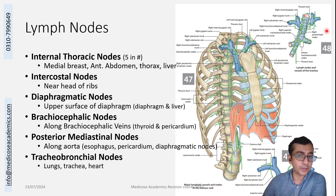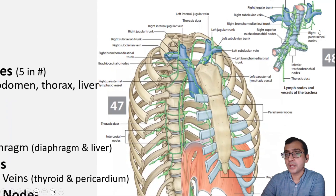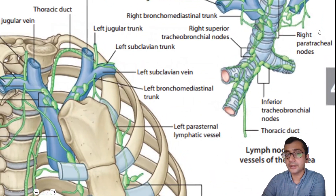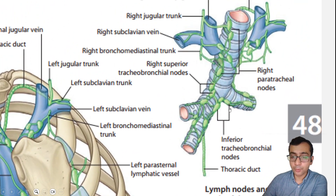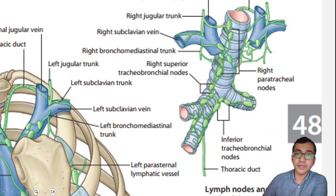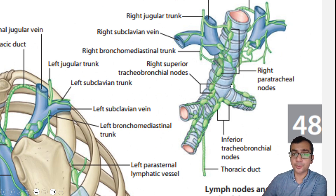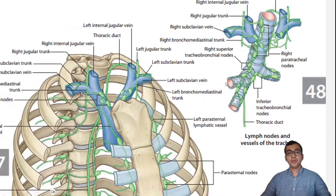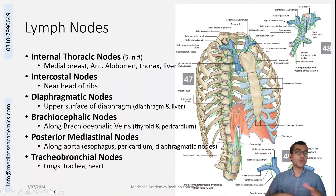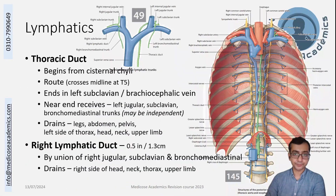There are also nodes around the trachea and bronchus: tracheobronchial nodes where the trachea and bronchi meet, paratracheal nodes on either side of the trachea, and pre-tracheal nodes in front of the trachea. These are the different nodes whose names you must know.